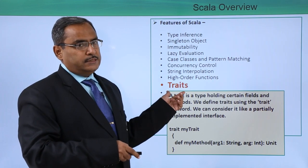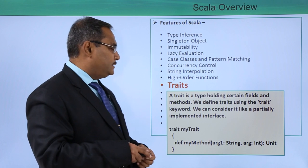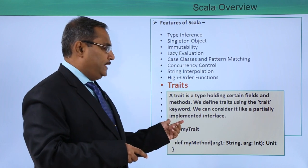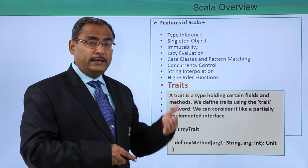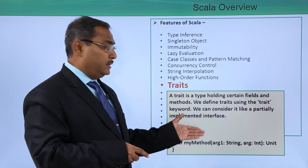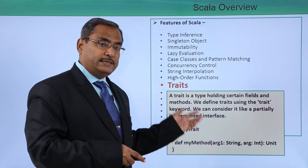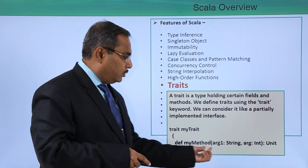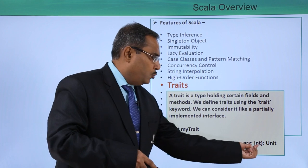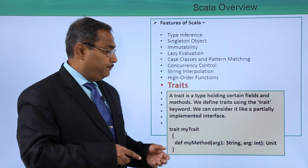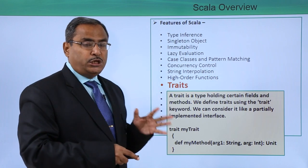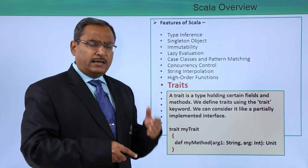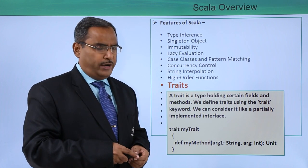The next property is trait. A trait is a type holding certain fields and methods, defined using the 'trait' keyword. We can consider it like a partially implemented interface — similar to Java's interface concept. For example, 'trait MyTrait { def myMethod(arg1: String, arg2: Int): Unit }'. A class can implement multiple traits as required.